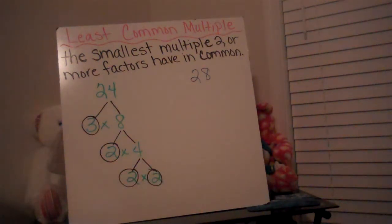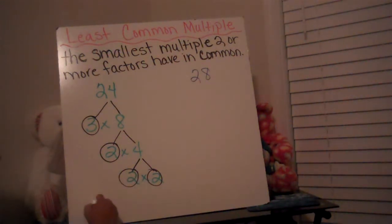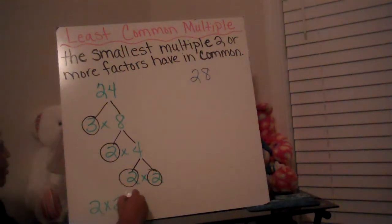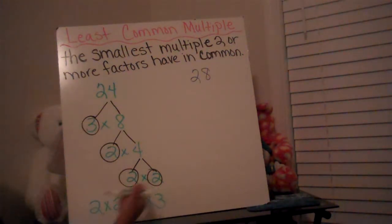So right now the prime factorization for 24 — I'm going to write my bases in order from least to greatest. The smallest base I have circled is 2, so I'm going to have 2 times 2 times 2 times 3. I have 4 circles, so I should be multiplying 4 numbers.